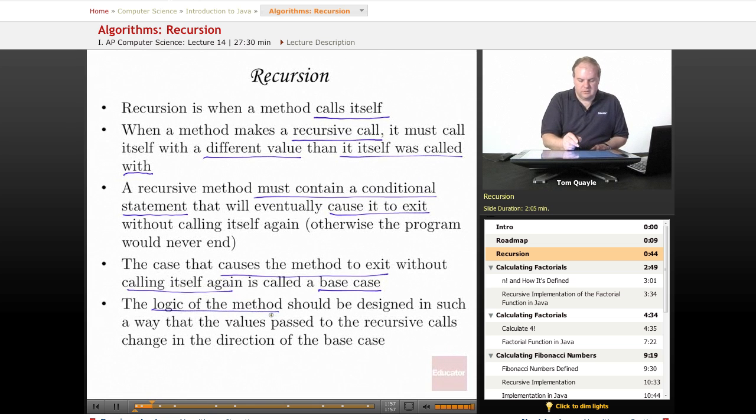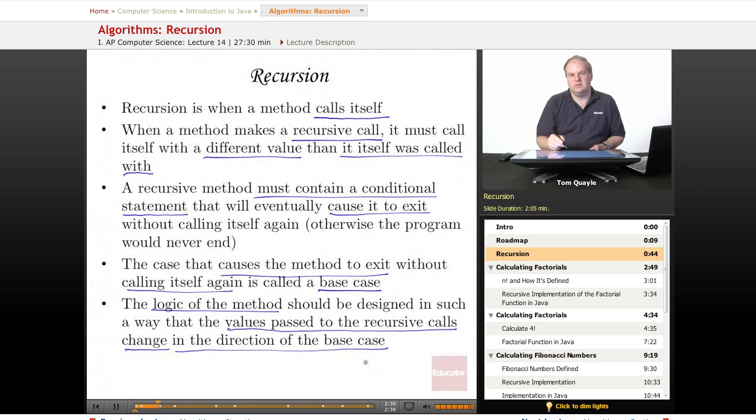The logic of the method should be designed in such a way that the values that are passed to the recursive calls change in the direction of the base case. So if our base case is when the value passed into the method is zero, we want the method to call itself in such a way that the number that's passed to the successive calls to itself is decreasing from whatever value was called initially down toward the base case of zero. Alternatively, if your base case is a large positive number, you would want the direction of the numbers that are being passed to the recursive calls to be increasing towards the base case. Most commonly, the base case is going to be either zero or one, so you would want the numbers to be decreasing.